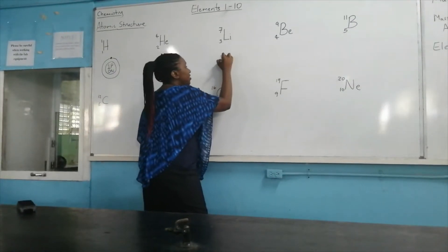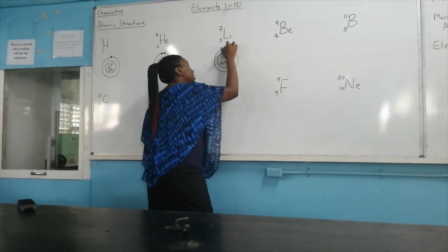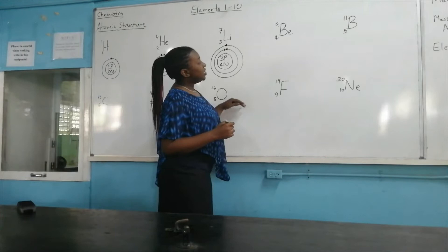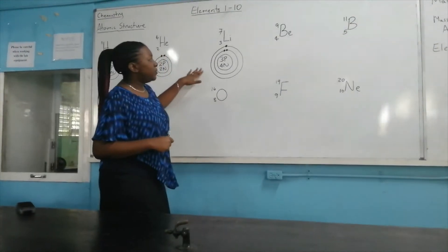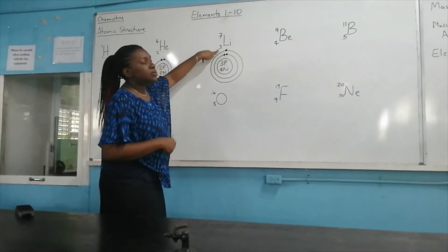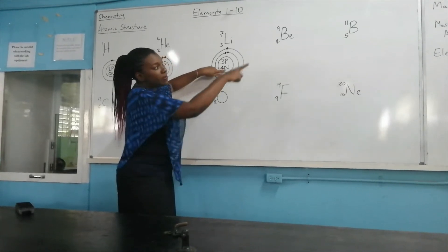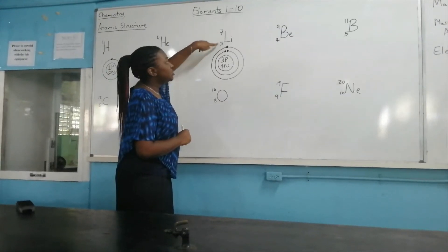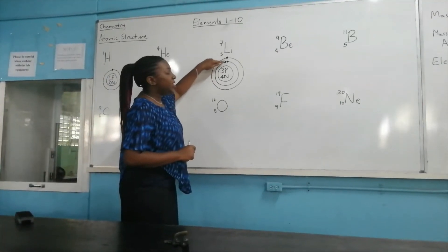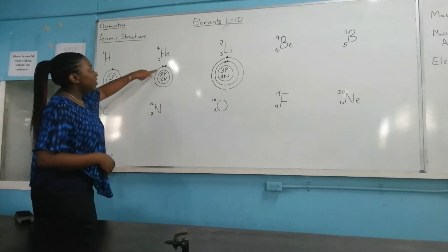Element number 3 is lithium. We have three protons and four neutrons. We have two electrons on the first shell, and because the first shell is full, we draw another circle for shell number 2. On shell number 2, we put the third electron. The number of protons equals the atomic number. To get neutrons, we apply the formula: mass number minus proton number — so 7 minus 3 gives four neutrons. These are all neutral atoms, so the number of protons equals the number of electrons.